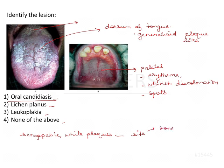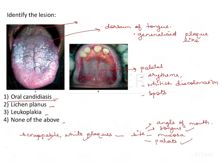Oral candidiasis can occur on any site — tongue, mucosa, palate, or angle of mouth. These are the features of candidiasis. From the given image, yes, it could be a scrappable white lesion present on tongue and palate, so all the criteria are fulfilled.